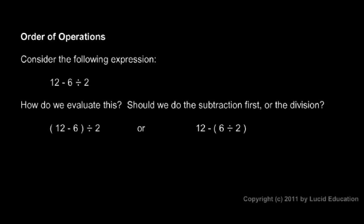Next we need to say a few things about order of operations. Think about this expression: 12 minus 6 divided by 2. The question is, how do we evaluate this — how do we figure out what number this ends up being equal to? Should we do the subtraction first or the division? The subtraction appears first, and then the division, so you might be tempted to do the subtraction first, but that's not correct. You end up having to do the division first.